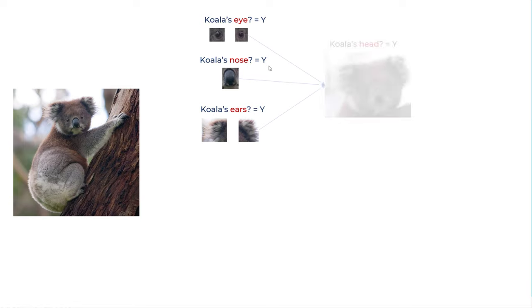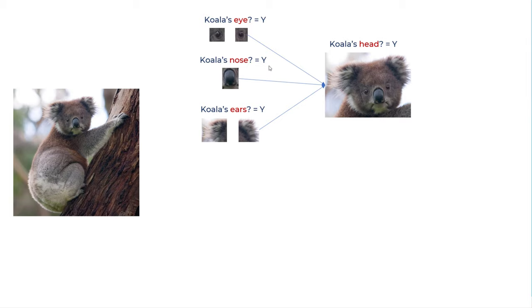Then these neurons are connected to another set of neurons which will aggregate the results. It will say if in the image you are seeing koala's eye, nose, and ears, it means there is a koala's face in the image.